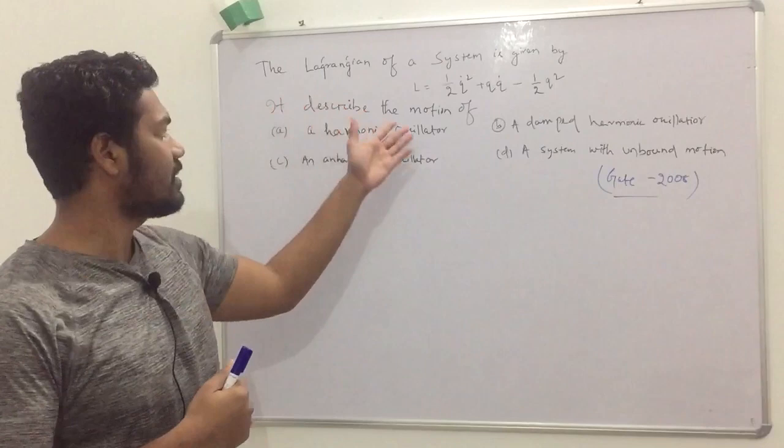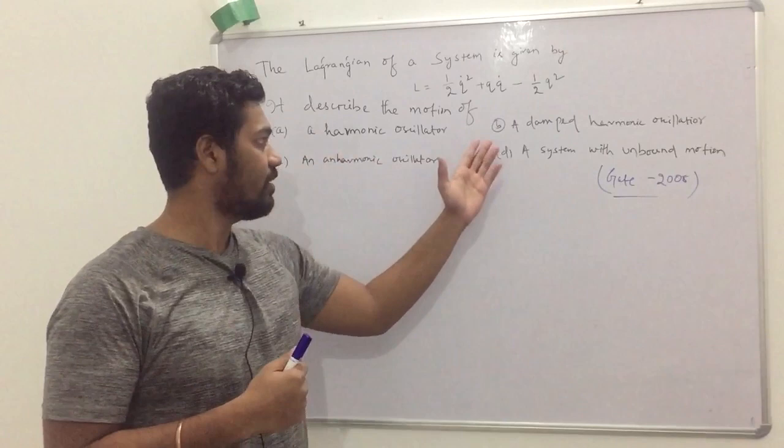It describes the motion of: (a) a harmonic oscillator, (b) an anharmonic oscillator, (c) a damped harmonic oscillator, or (d) a system with unbound motion.